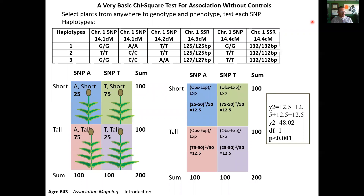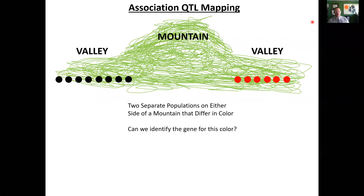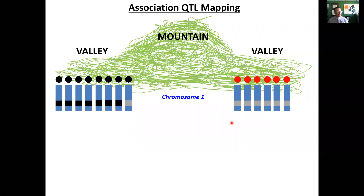We saw we can identify a significant SNP very easily with a chi-square test. But what's the problem? Let me give a theoretical example to illustrate the biggest problem with association mapping: population structure. If we go into a remote region and find a mountain that separates genetic gene flow from one side to the other — so populations were isolated — this population is all black, this population is all red. Can we use association mapping to identify the gene for color?